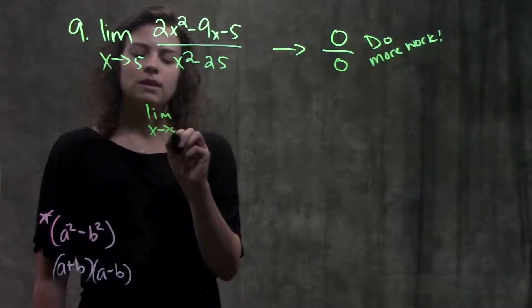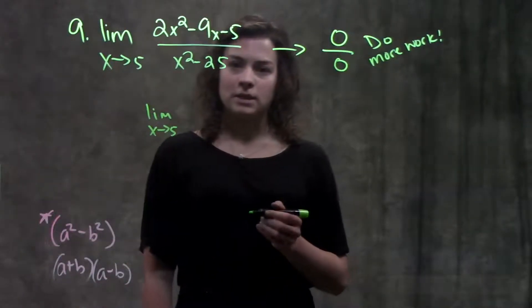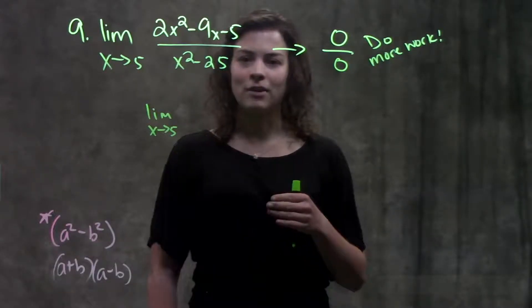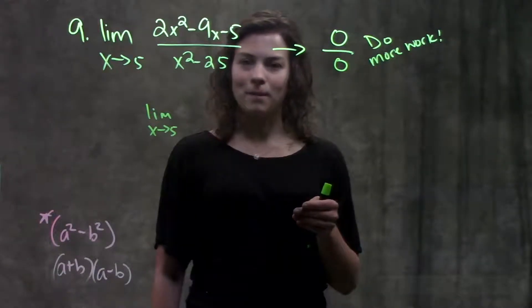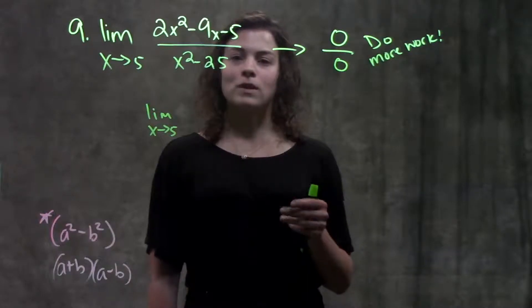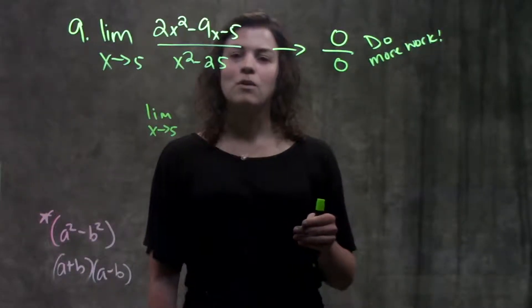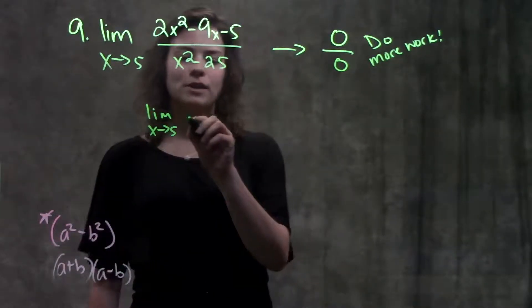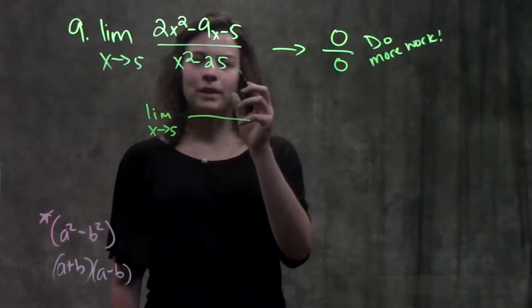So like we said, this function has complex algebraic expressions in it. If you watched that video on the roadmap of how to solve these limit problems, whenever we saw a problem with complex algebraic expressions, we want to think factor. So let's factor both the top and the bottom.